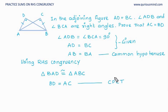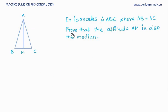Let's do the next one. In isosceles triangle ABC where AB is equal to AC, prove that the altitude AM is also the median. So AM is the altitude, so it is 90 degrees.